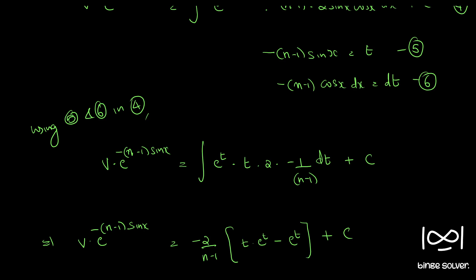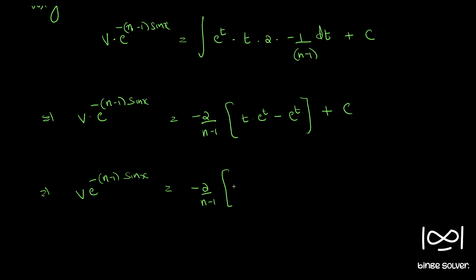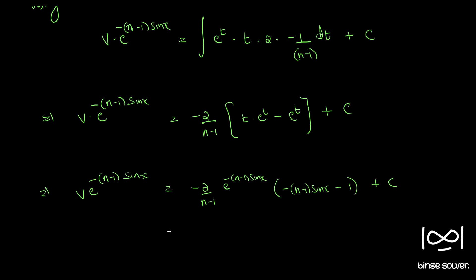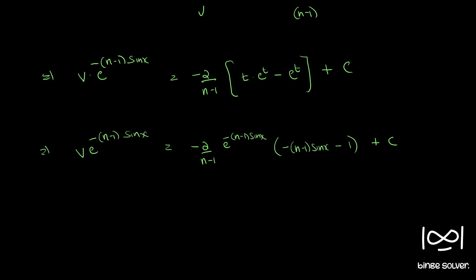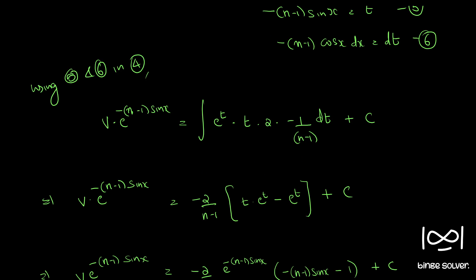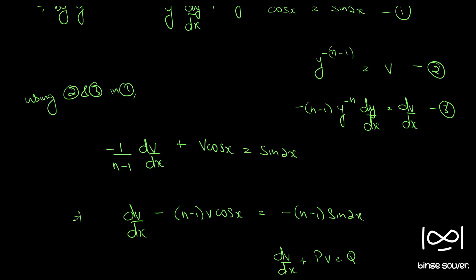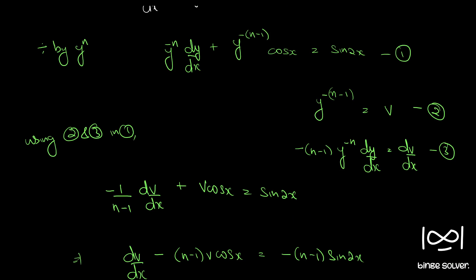So v times e raised to minus (n minus 1) sin(x) equals minus 2 by (n minus 1) times e raised to t, where t is minus (n minus 1) sin(x). Taking e raised to t outside gives e raised to minus (n minus 1) sin(x) times the quantity minus (n minus 1) sin(x) minus 1, plus C.